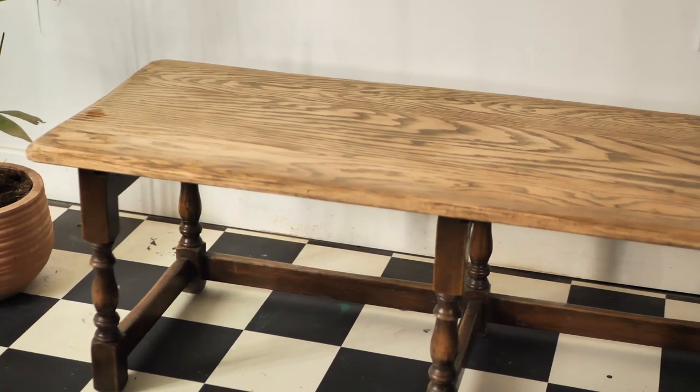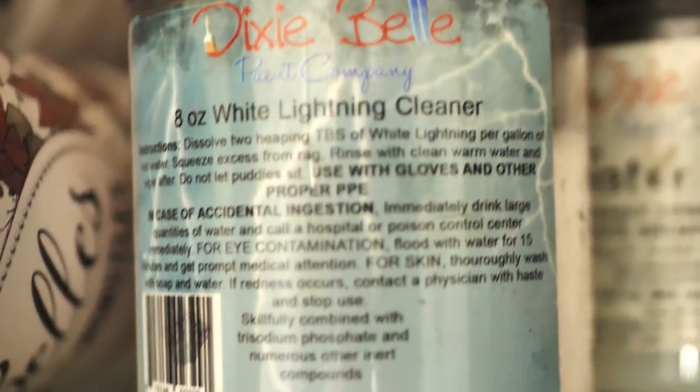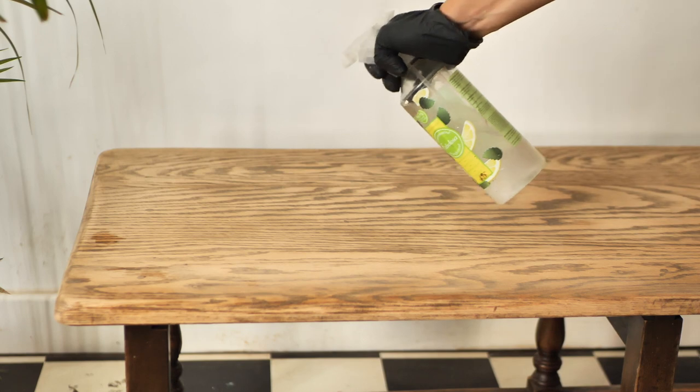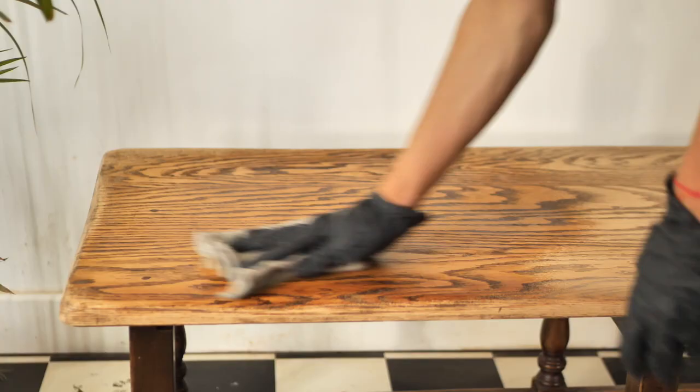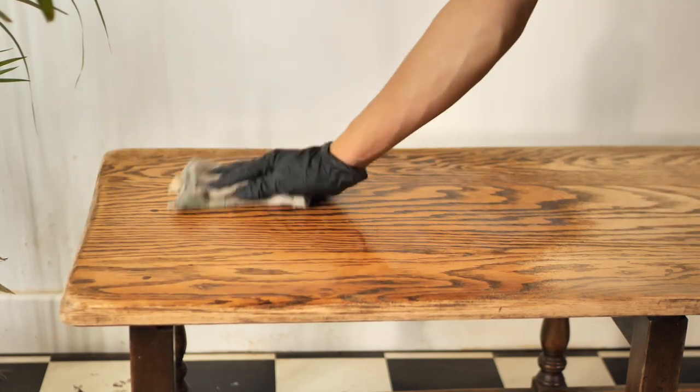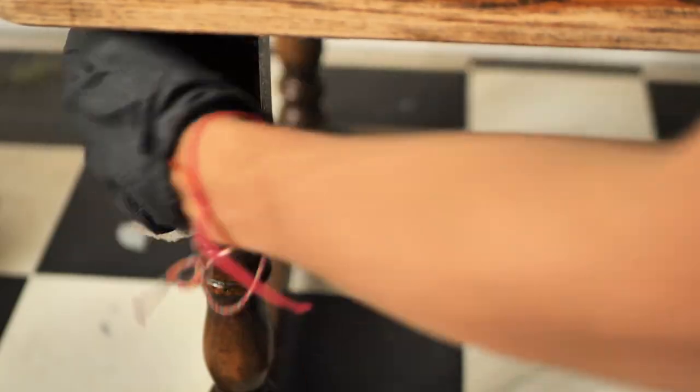The next step is cleaning this sweet table with White Lightning, which is Dixie Bell's furniture cleaner and an abrasive cloth. Then we rinse the table twice, only with water to get rid of any leftover solution or dirt.